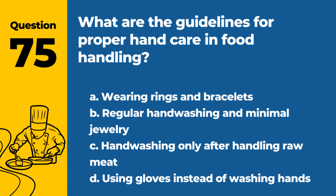Question 75. What are the guidelines for proper hand care in food handling? a. Wearing rings and bracelets. b. Regular hand washing and minimal jewelry. c. Hand washing only after handling raw meat. d. Using gloves instead of washing hands. Answer: b. Regular hand washing and minimal jewelry. Proper hand care is essential to prevent contamination.